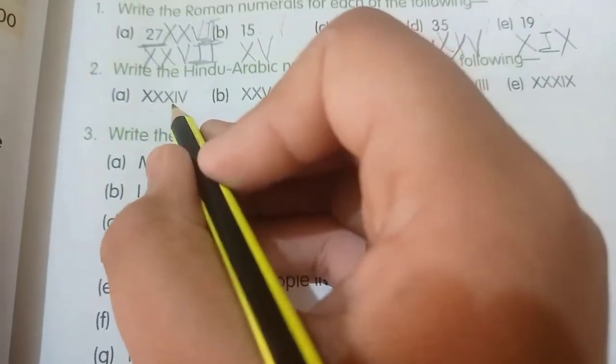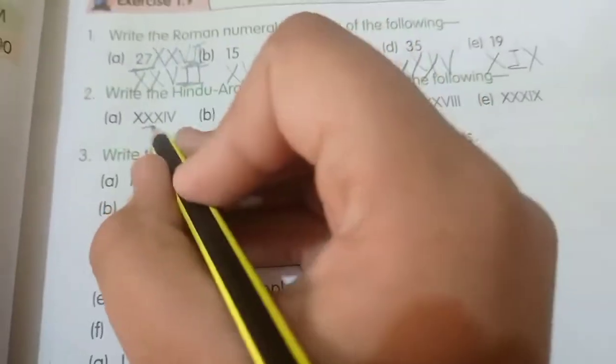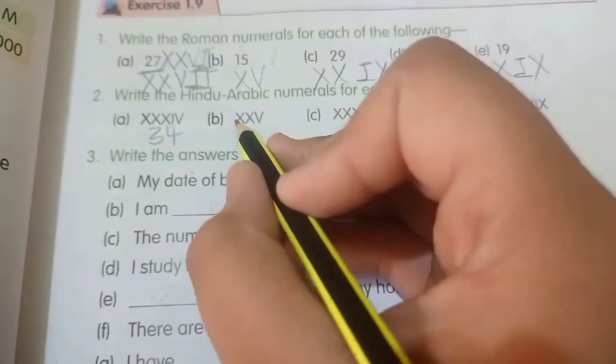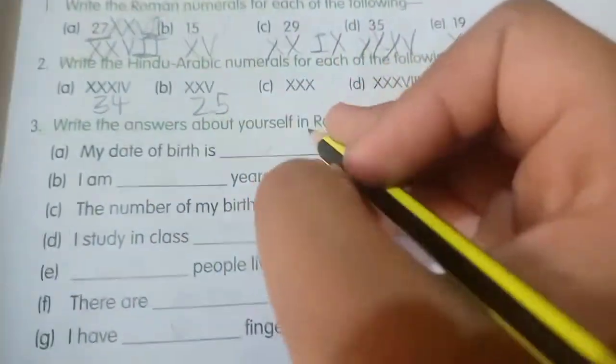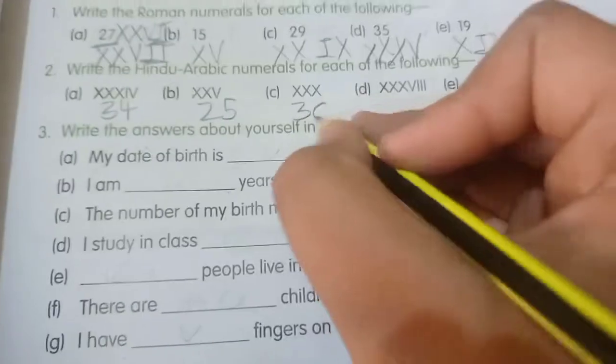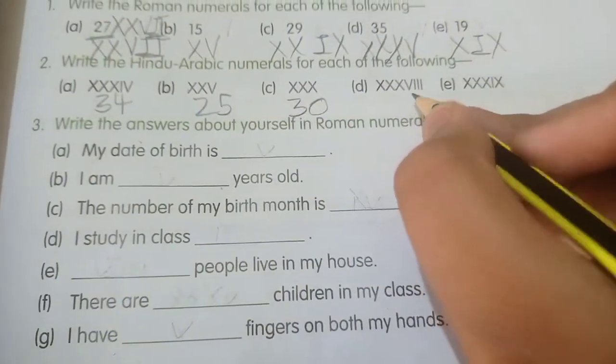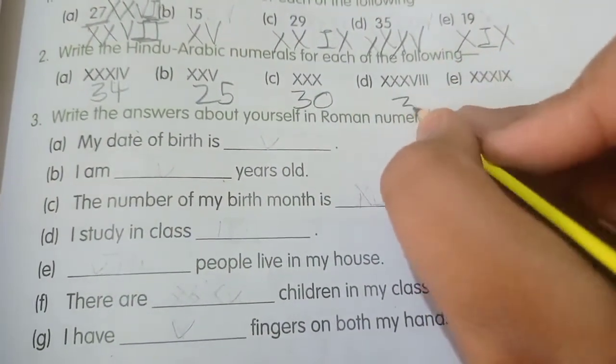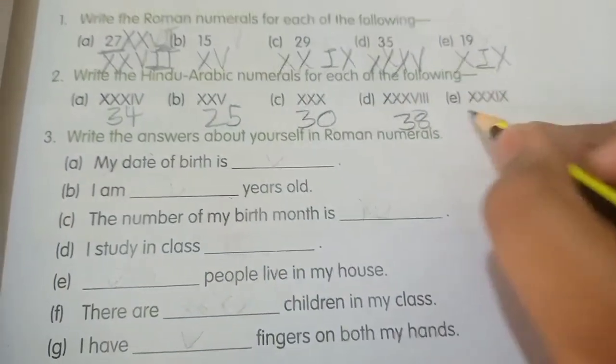XXXIV - that's 30 plus 4, so 34. First is 34. In B, XXV is 25. C is XXX, which is 30. D is XXXVIII, which is 38. And E is XXXIX, which is 39.